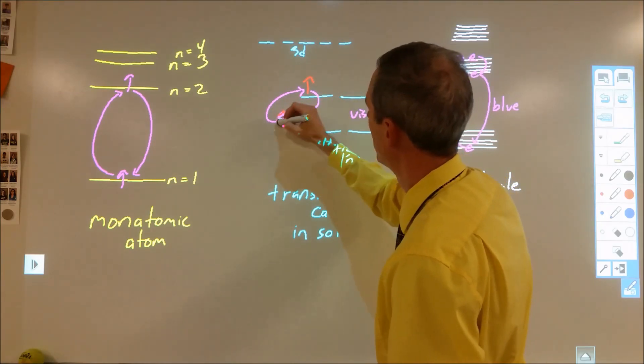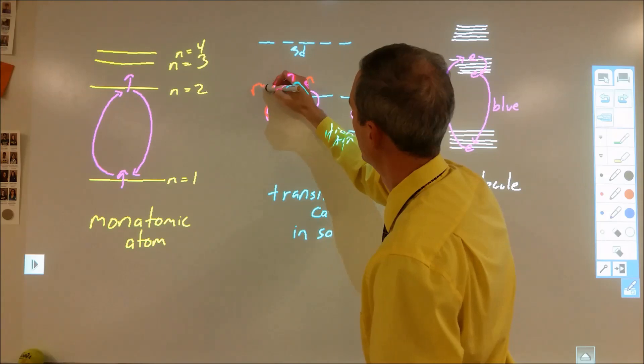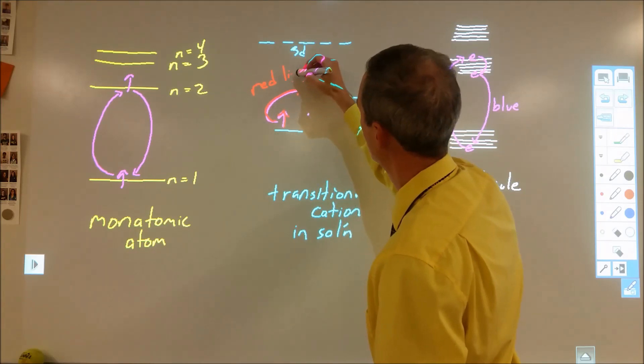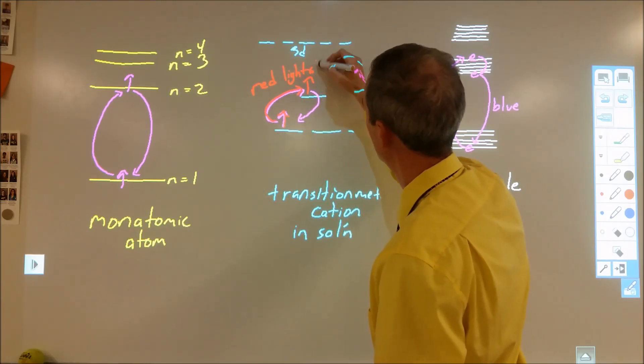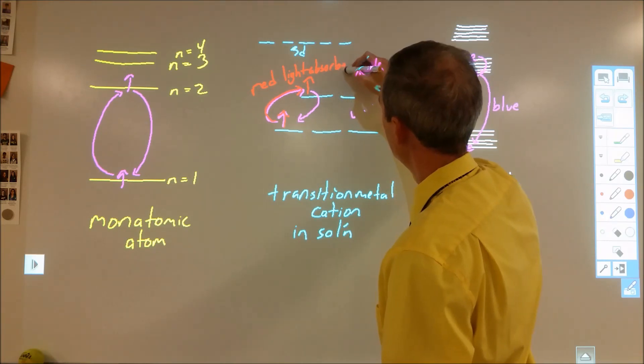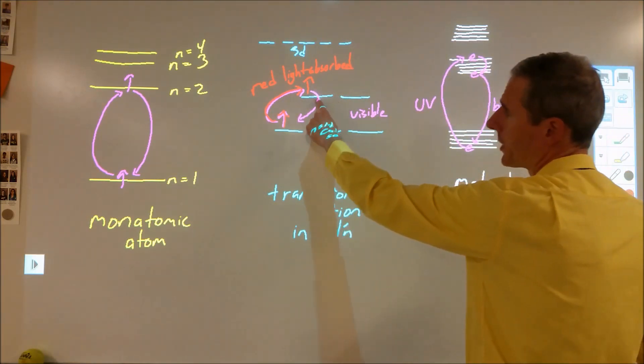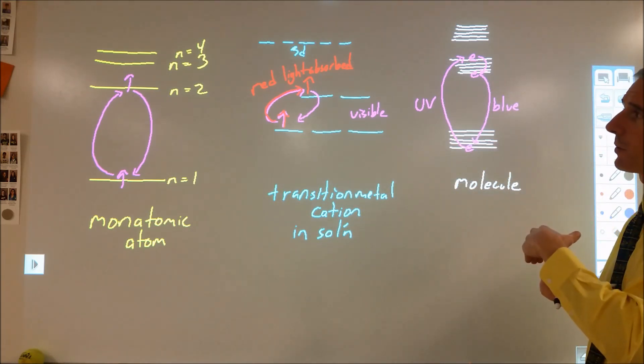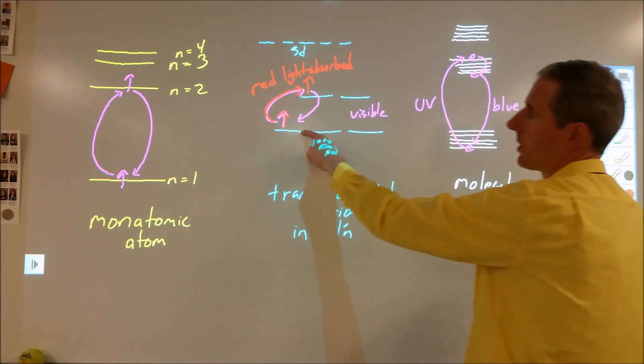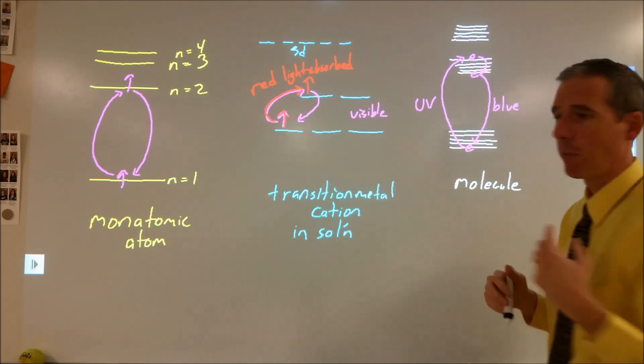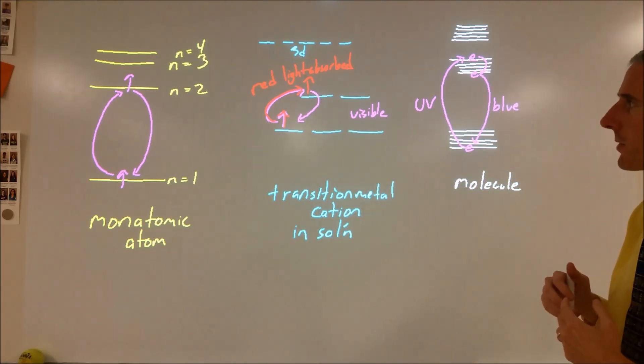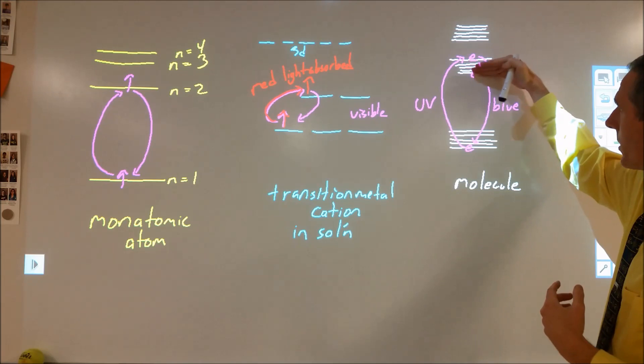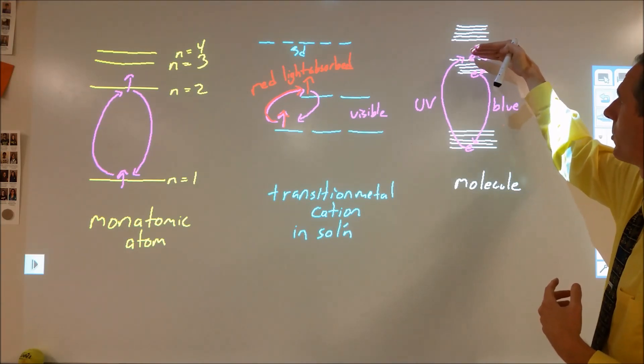We would often expect that that red light would then be re-emitted as the electron eventually comes back down. Sometimes some of the excited states are more stable than others, so sometimes they last longer. Also there's those examples in molecules where this occurs in steps.